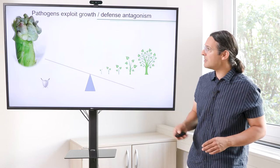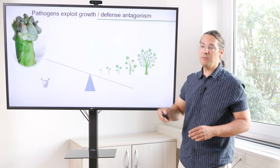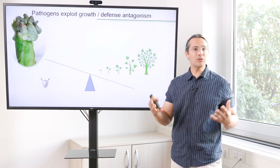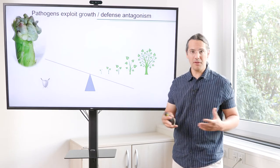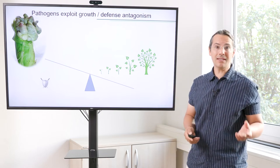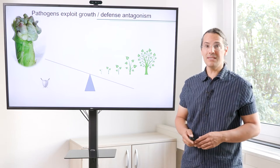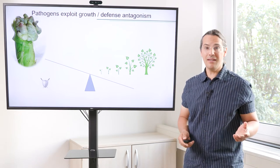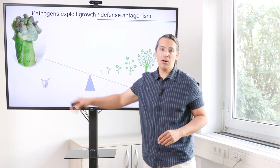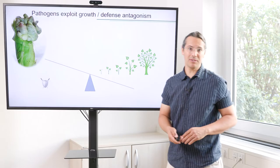This is also what we assume for Ustilago maydis, which causes this uncontrolled growth — the gall formation — because exactly this leads in the end to a diminishing of the defence responses.